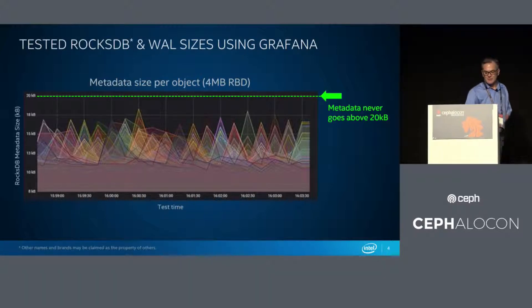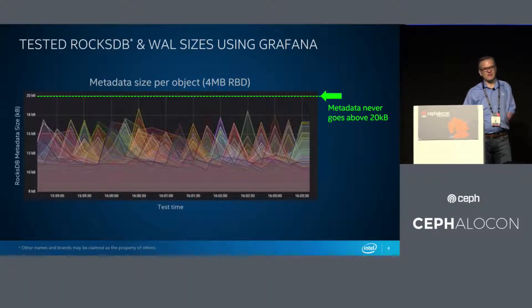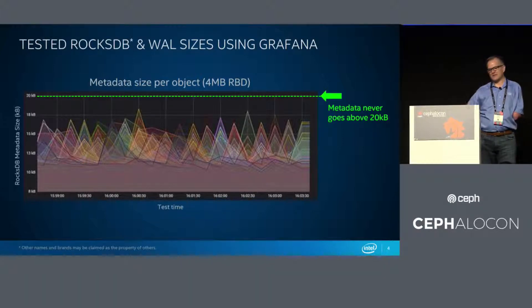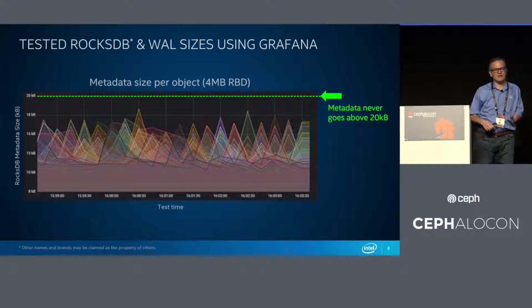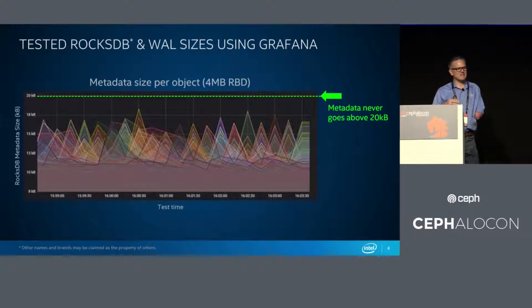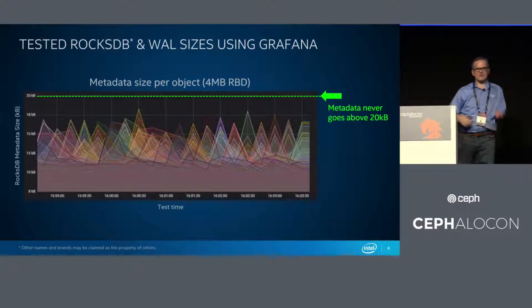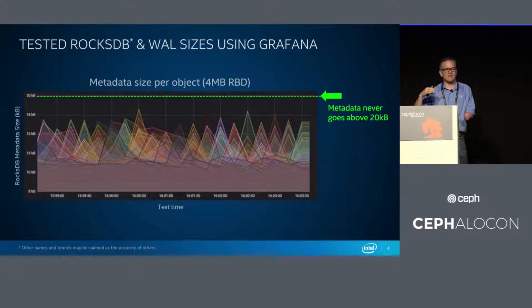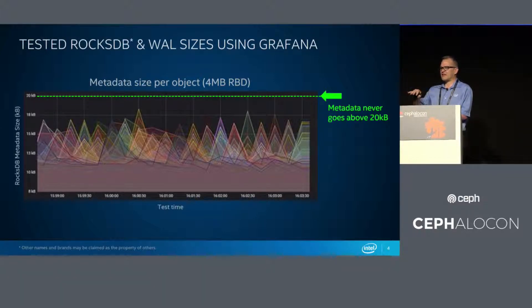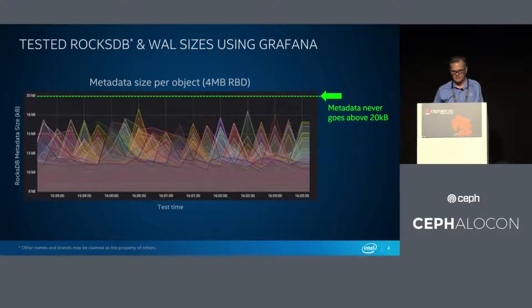It turns out that the largest value, if you look at the max, was around 18.5KB. So we said we'd take a worst case and set it at 20K — set a ceiling at 20K of metadata per object.